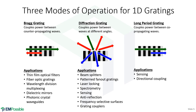If the period is very long, we actually get coupling between two different co-propagating modes and we can get directional coupling. There are long-period fiber optic grating sensors, and these are really, really sensitive — they can detect down to single molecules.